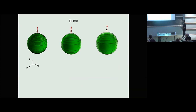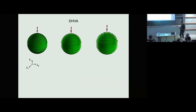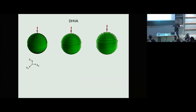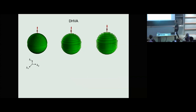So de Haas van Alphen — everybody in this audience knows what it is. It's the oscillatory magnetization that is measured in the presence of a magnetic field. You have a Fermi surface, for instance a three-dimensional Fermi surface, and in a magnetic field you have Landau quantization. As you change the magnetic field, the Landau levels cross the Fermi energy as they get depopulated. At zero temperature that produces a non-analyticity in the thermodynamic potential, and therefore everything else will be oscillatory as a consequence. These oscillations get washed out by impurities or by finite temperature.